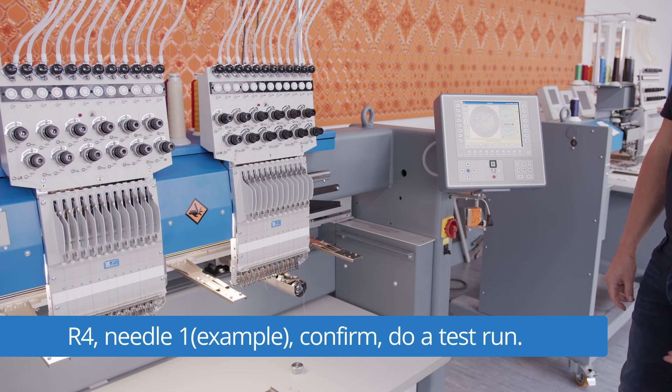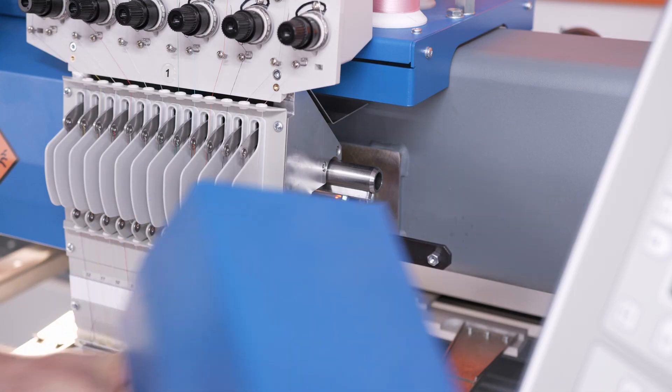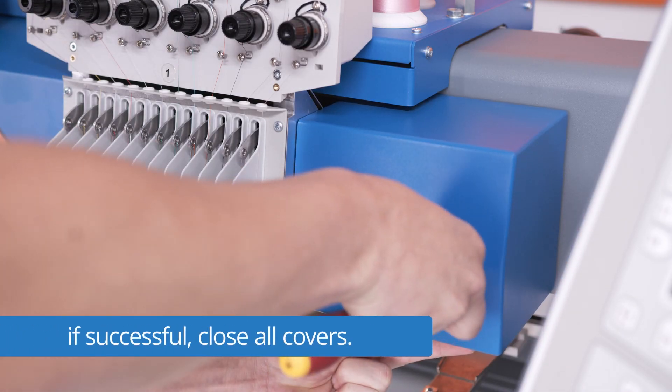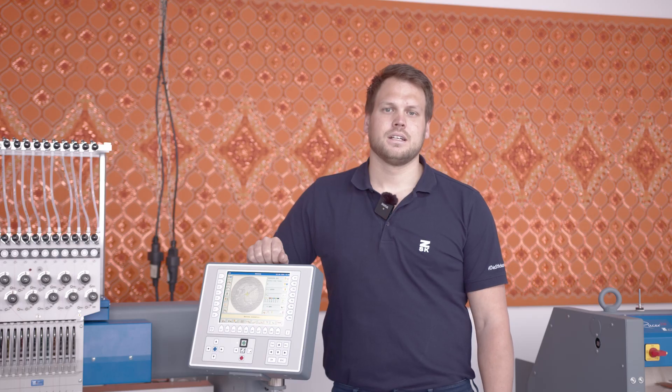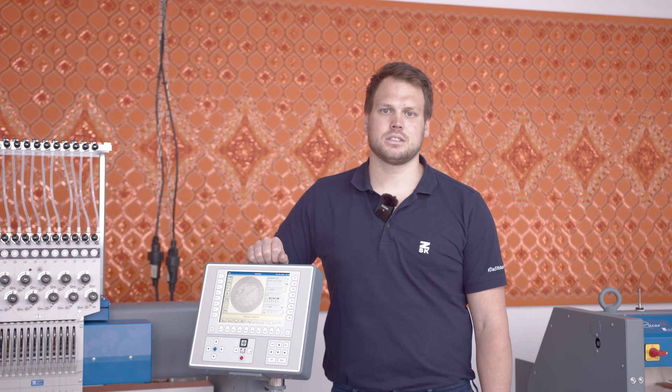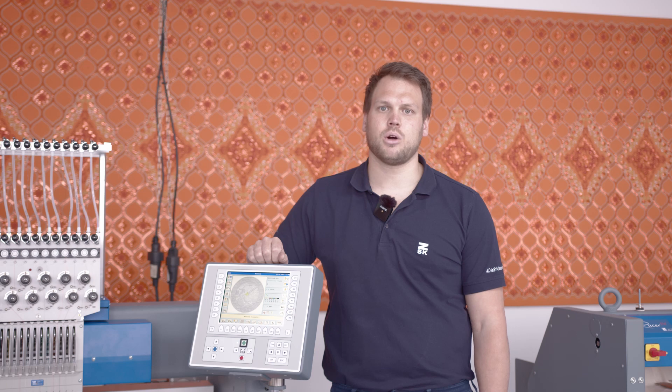Now we will do a test run with the machine. After that we are closing all covers. If the test was successful you can close all the covers and you're done. Thank you for watching us. If you need further assistance please contact your local agency. The contact details will be found on our website.